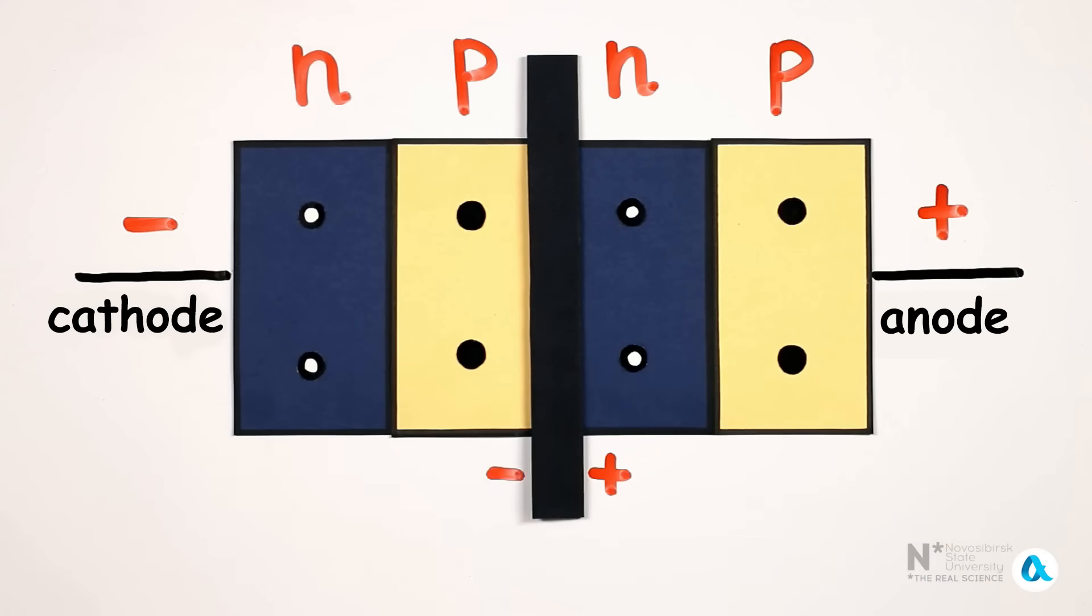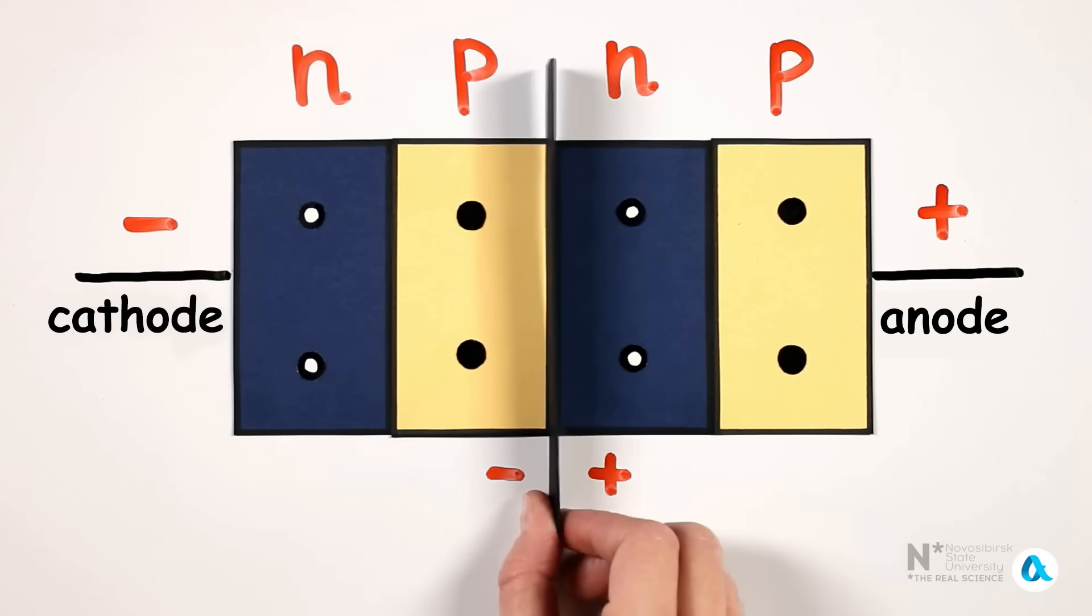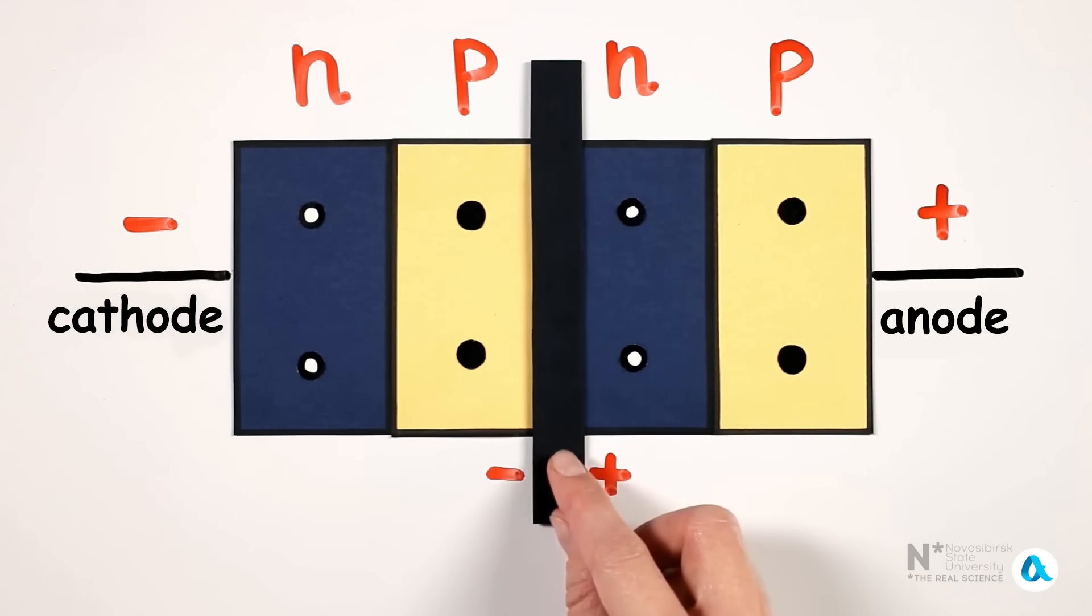If we apply a sufficiently high voltage to the thyristor, the middle junction will break down, and the thyristor will open. But for the specific thyristor I used in our experiments, the breakdown voltage is 400V, and we were dealing with much lower voltages.